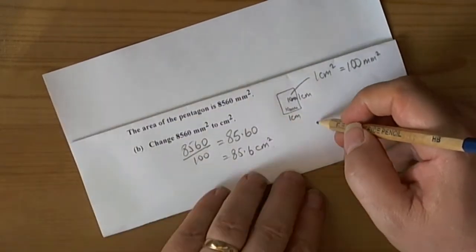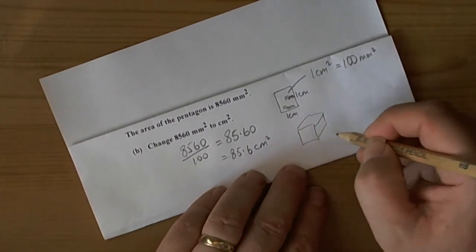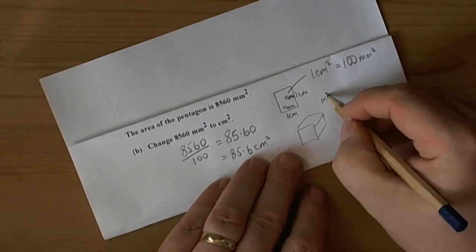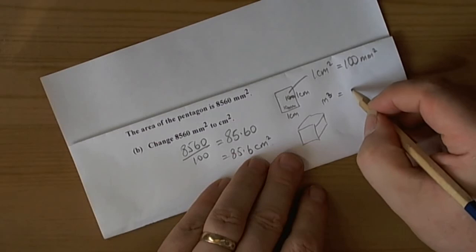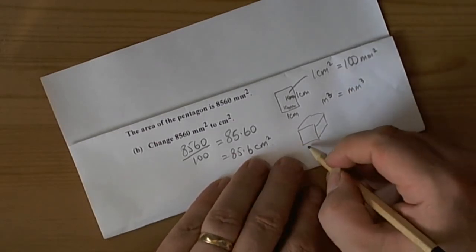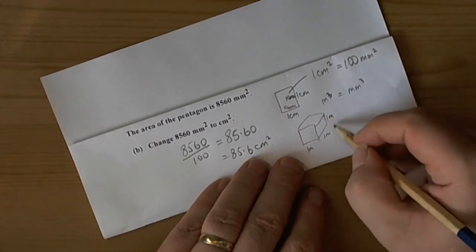If you had to do cubic units then again the idea would be imagine what one of something is. So for example, say we were going from cubic meters into millimeters cubed or cubic millimeters. Then we can imagine one meter by one meter by one meter, that's the cubic meter.